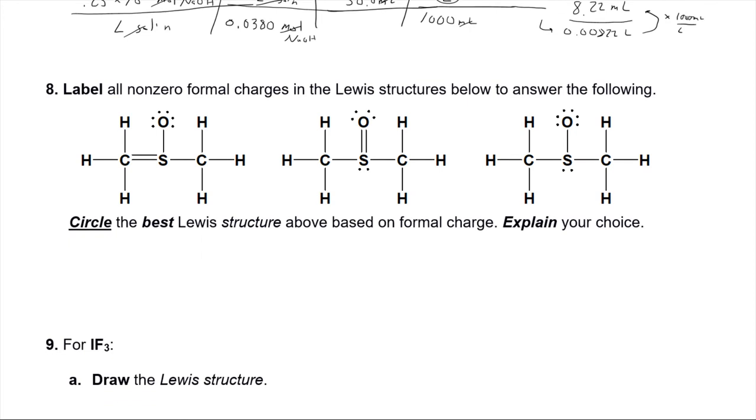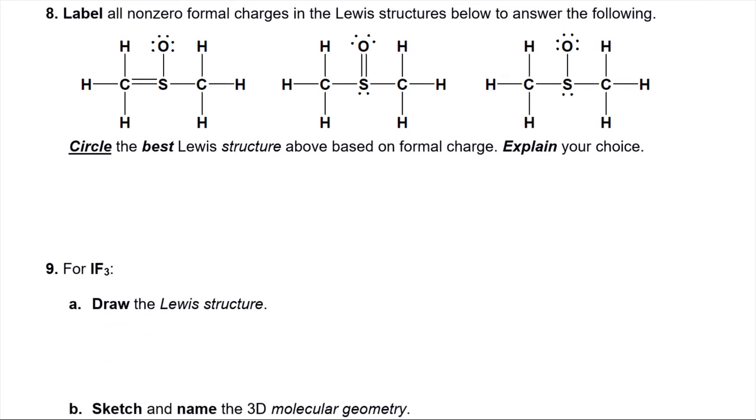And then the last one here, or the last formal charge argument one here that we're worried about. This is, looks like a crazy complicated molecule, but it's not that bad. It's a circle, the best Lewis structure based on formal charge. Okay. Hydrogens, one minus one. So we don't care about these hydrogens. Don't let them distract you. It's a lot of extra work. Just get rid of them. Don't worry about it. Now let's jump into this one.